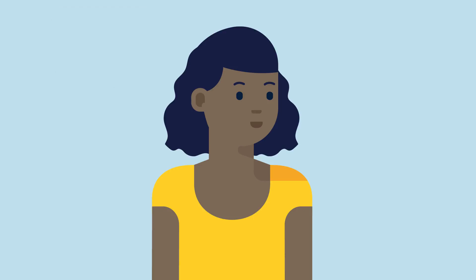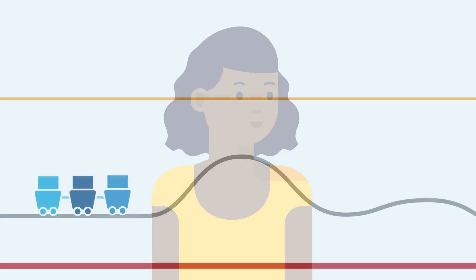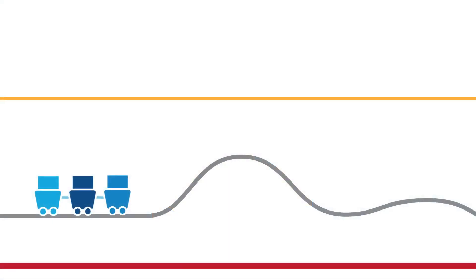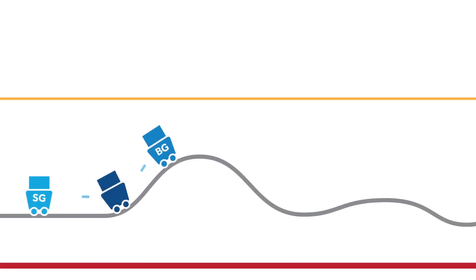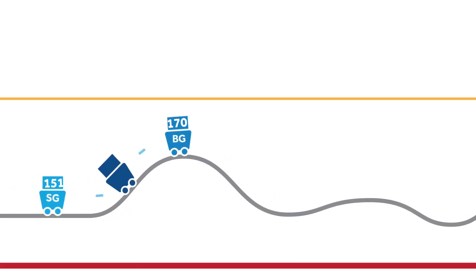Let's see how a roller coaster can help illustrate this. Picture your blood glucose and sensor glucose as cars on a roller coaster. The front car will be your BG and the back car will be your sensor glucose, or SG. As the roller coaster starts up the hill, you can see that the BG in the front car is leading the SG in the back car, and the numbers are different.